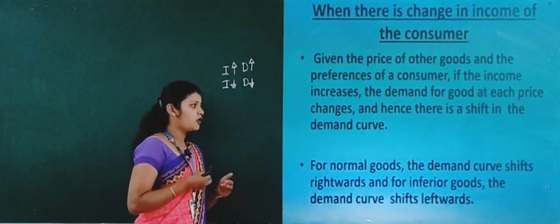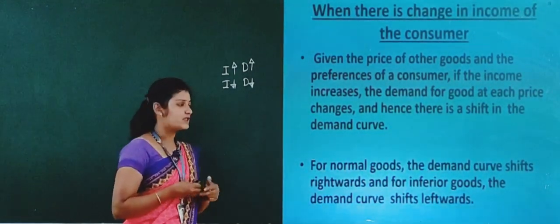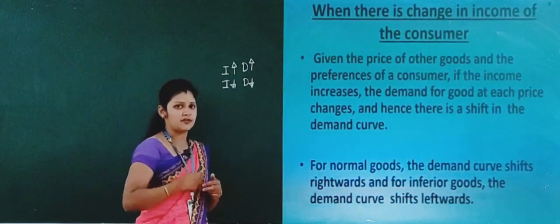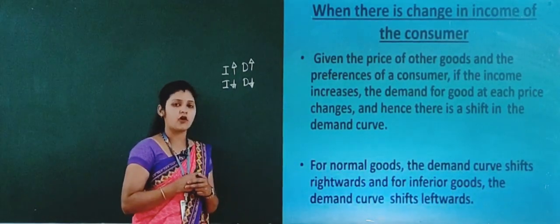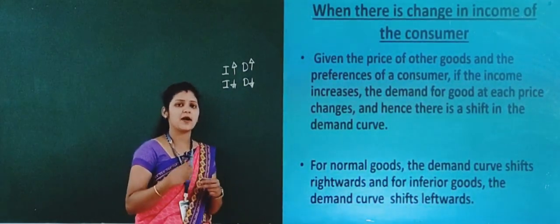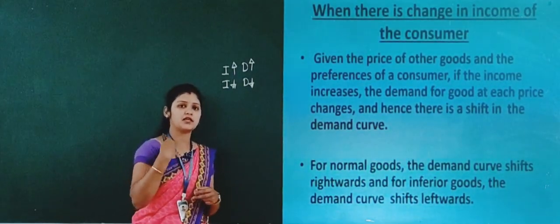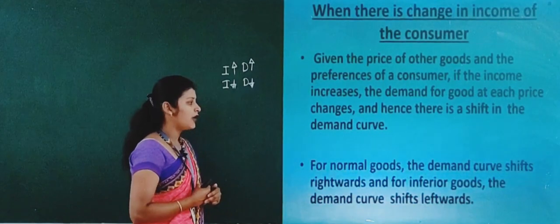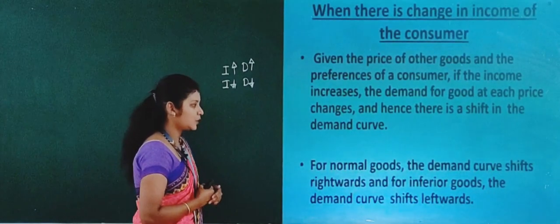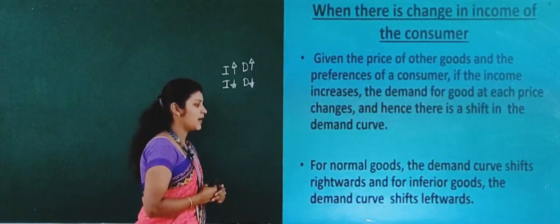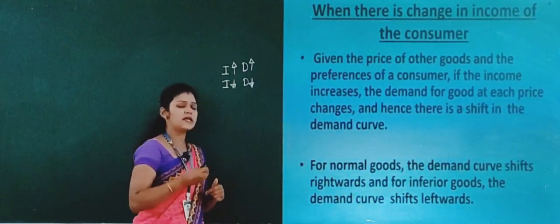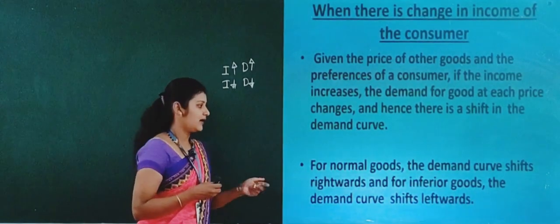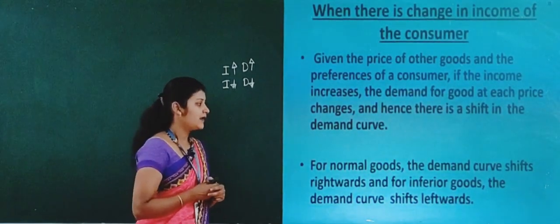For normal goods, the demand curve shifts rightward when income increases. For inferior goods, the demand curve shifts leftward.